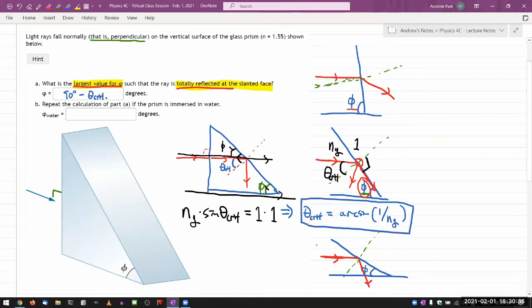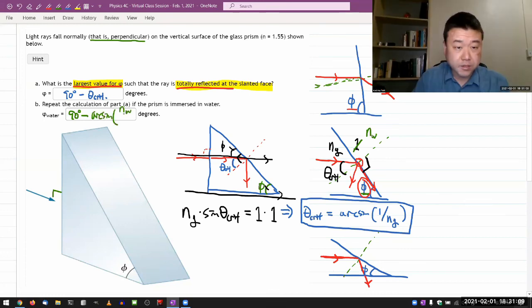Oh, the repeat the calculation. If the prism is immersed in water, that's an easy fix. Where I have one here, I would just say that's now index of refraction of water instead of index of refraction of air. So just writing out the whole thing, it should now be 90 degrees minus arc sine of index of refraction of water over index of refraction of glass.